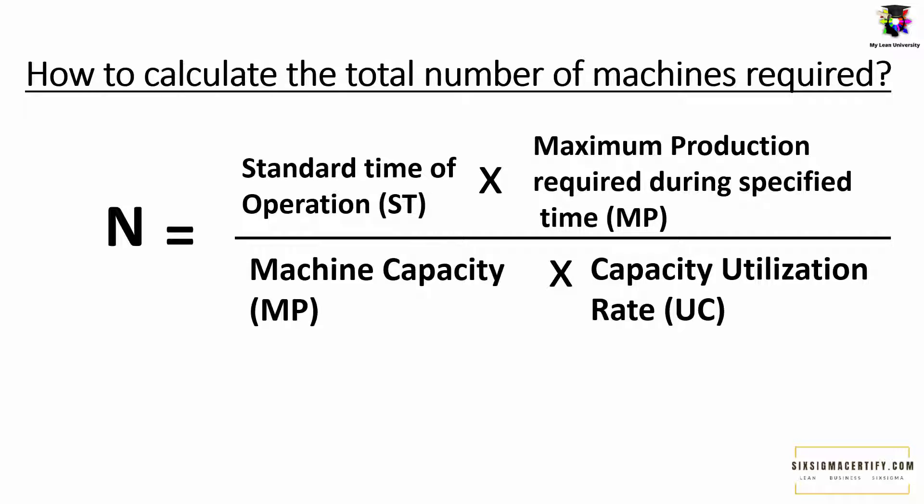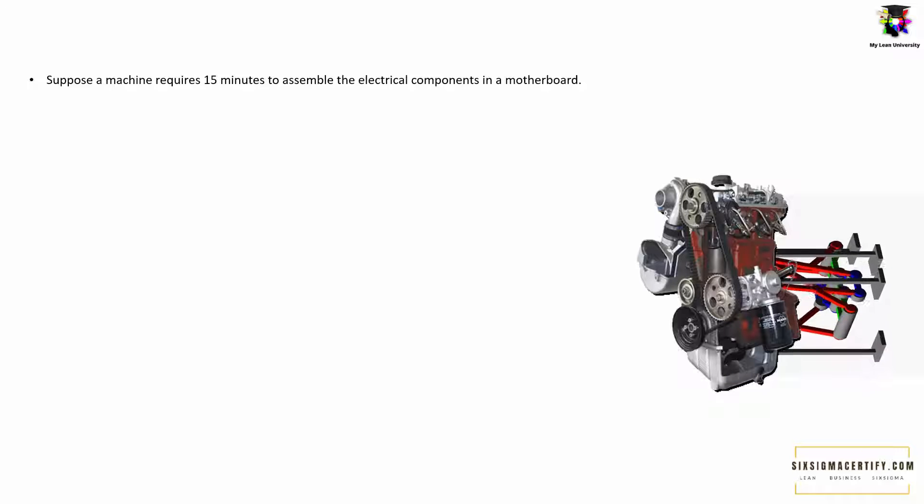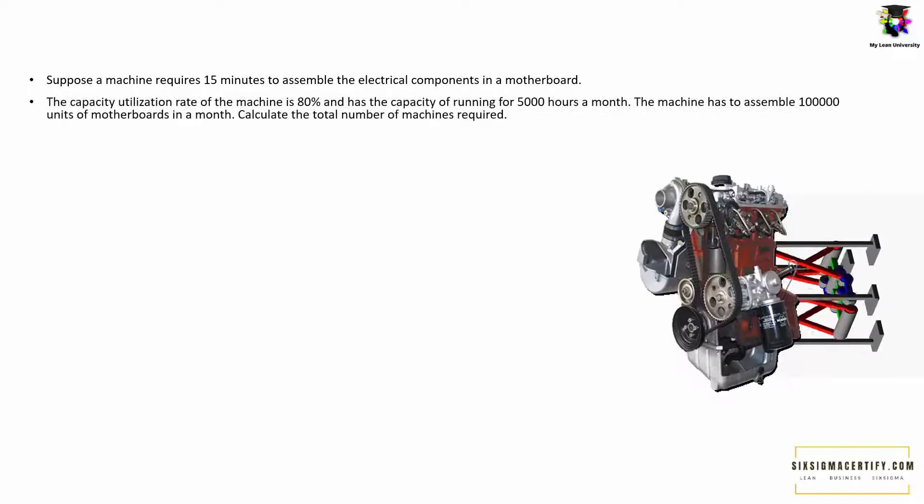Now let me explain this with the help of an example. Suppose a machine requires 15 minutes to assemble the electrical components in a motherboard. The capacity utilization rate of the machine is 80% and the machine has the capacity of running for 5000 hours a month. The machine has to assemble 100,000 units of motherboards in a month. Calculate the total number of machines required.